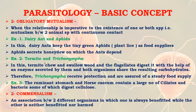Another famous example of obligatory mutualism is termite and Trichonympha. The termite chews and swallows wood, and the flagellates digest it with the help of enzymes secreted by them, and both organisms share the resulting carbohydrates. Therefore, Trichonympha receives protection and is assured of a steady food supply — both benefit in an obligatory manner.